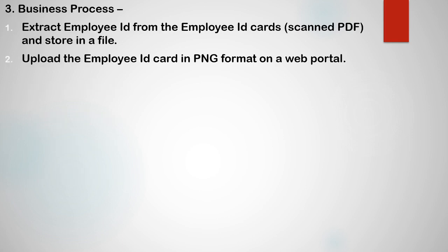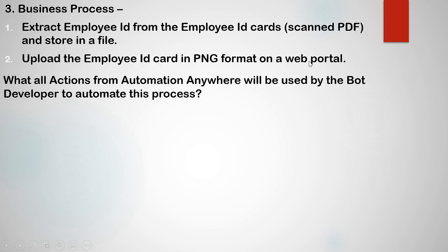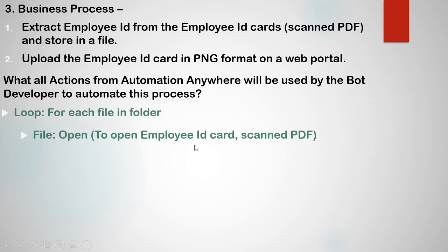Moving to the next question — a business process is given to extract employee ID from employee ID cards and store those employee IDs in a file. These employee ID cards are scanned PDFs. Then upload the employee ID card in PNG format on a web portal. What all actions from Automation Anywhere will be used to automate this process? First, since there are multiple employee ID cards, we are going to add a loop action with 'for each file in folder'.